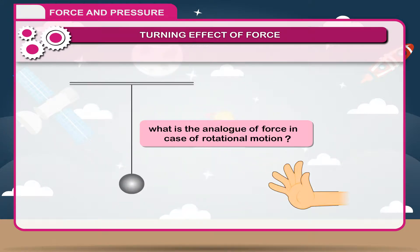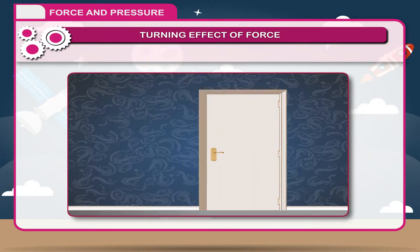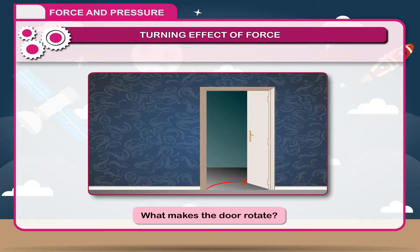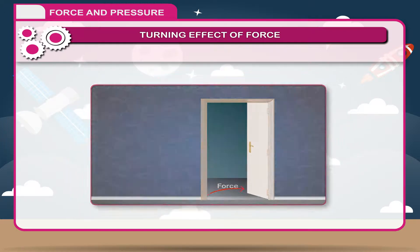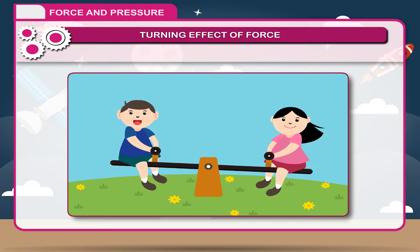But what is the analog of force in case of rotational motion? To look into the question, let us take the example of opening or closing of a door. A door is a rigid body which can rotate about a fixed vertical axis passing through the hinges. What makes the door rotate? A force applied to the hinge line cannot do the job. But a force of given magnitude applied at right angles to the door at its outer edges is most effective in producing rotation.